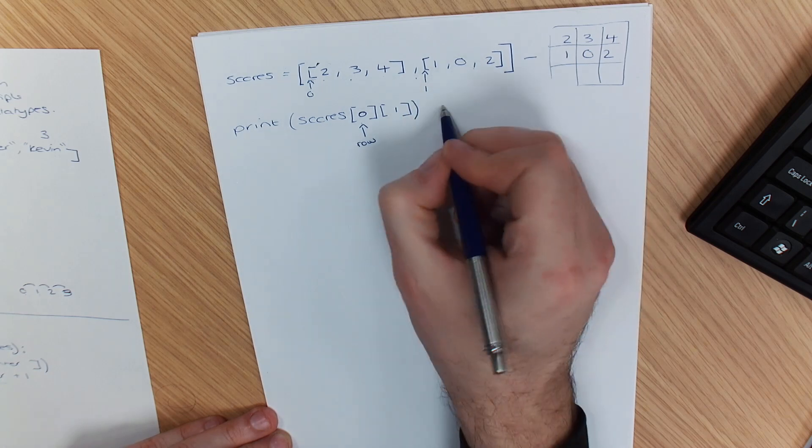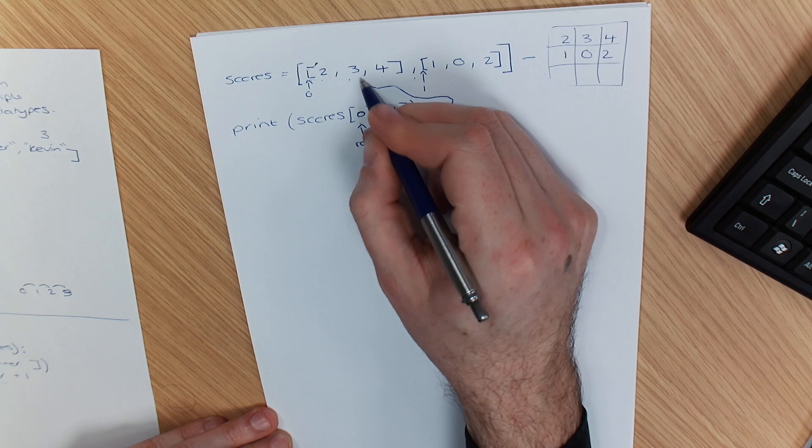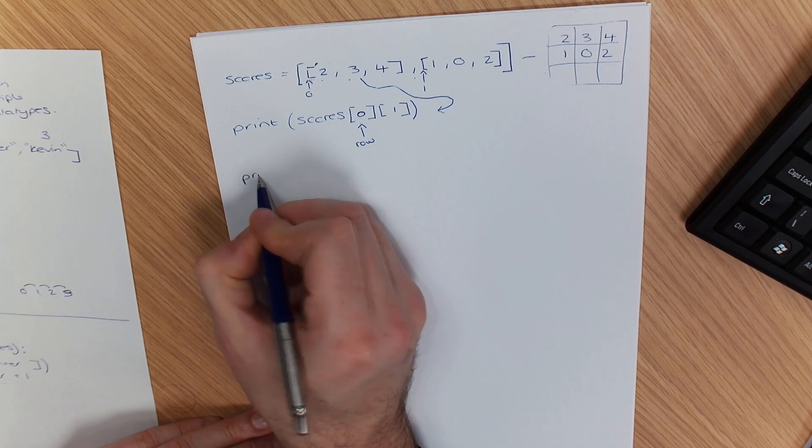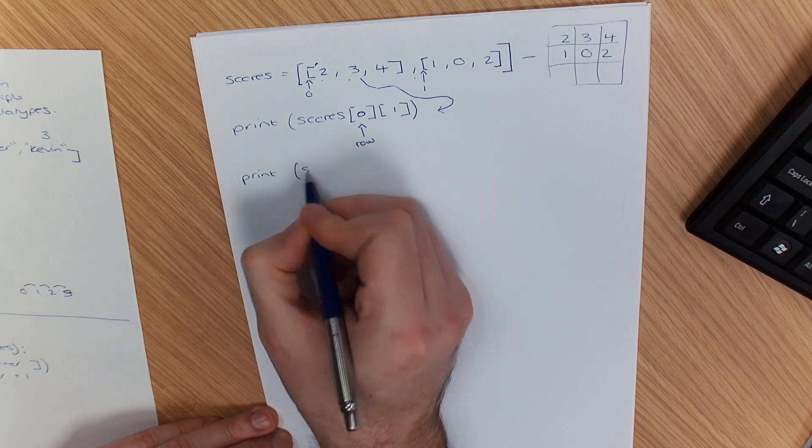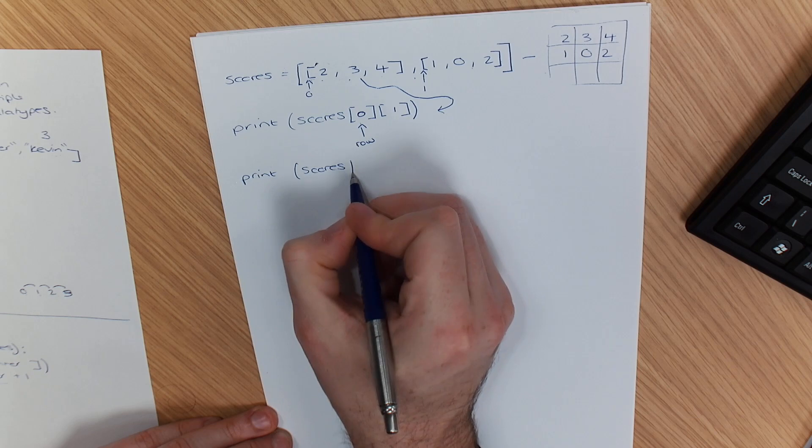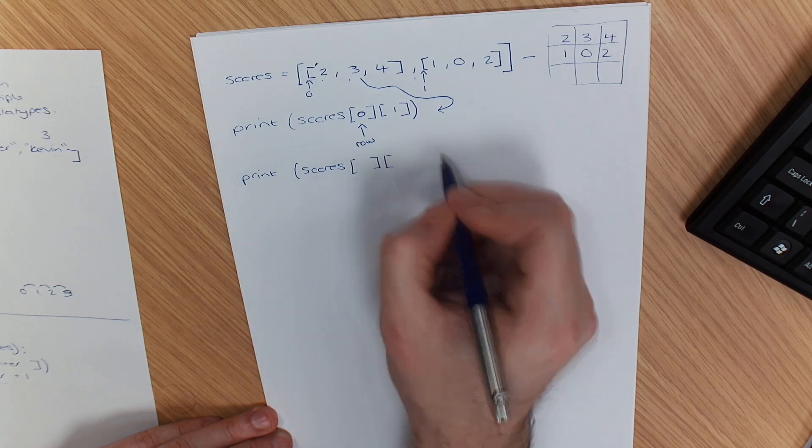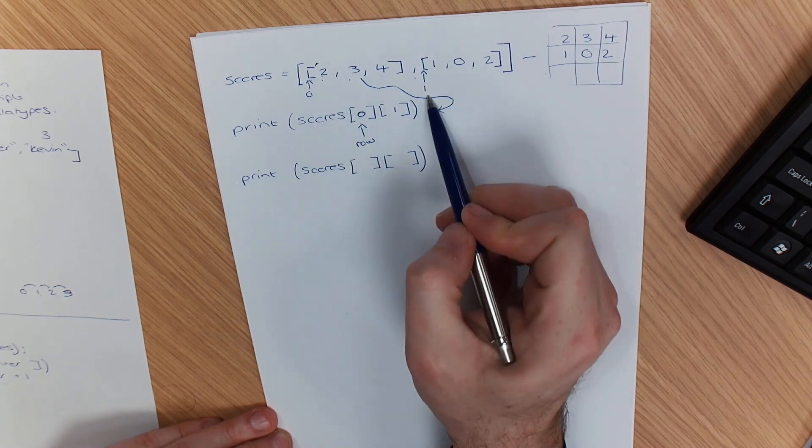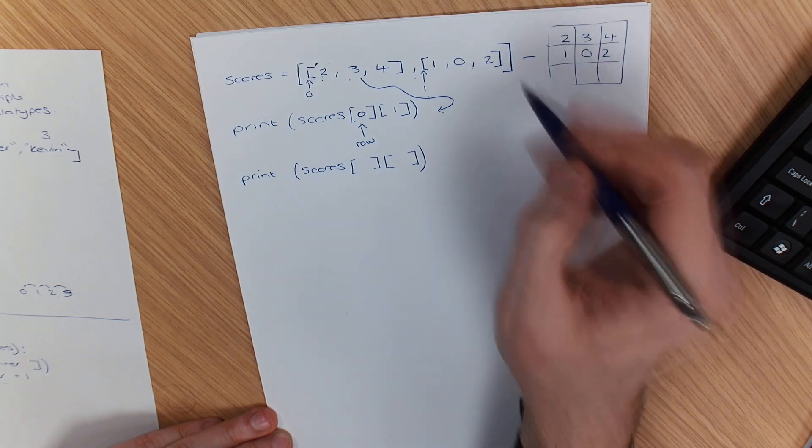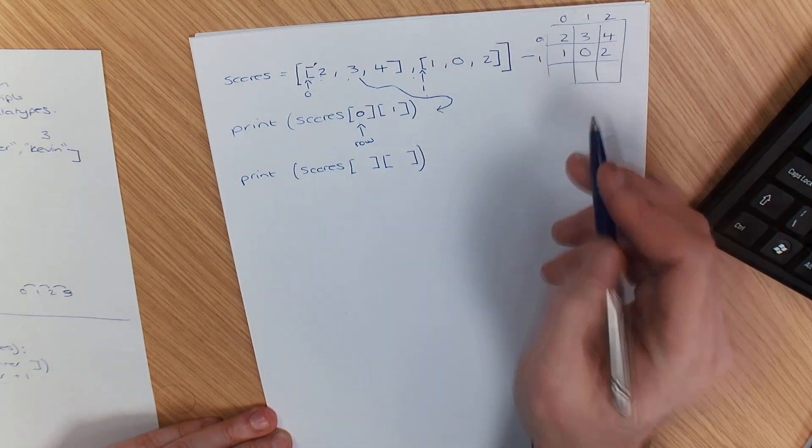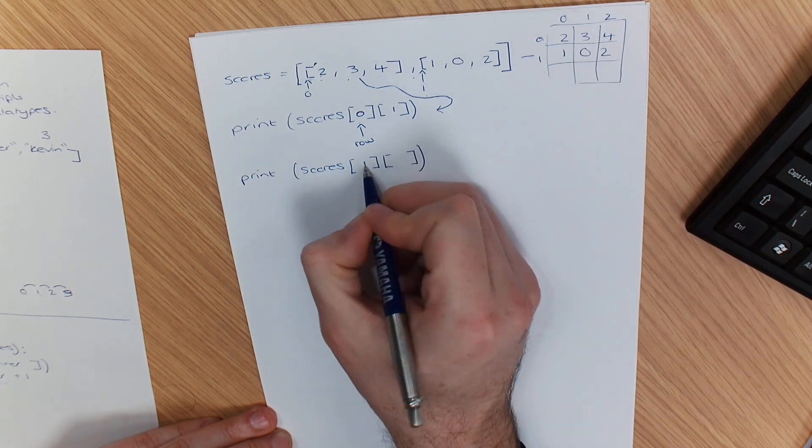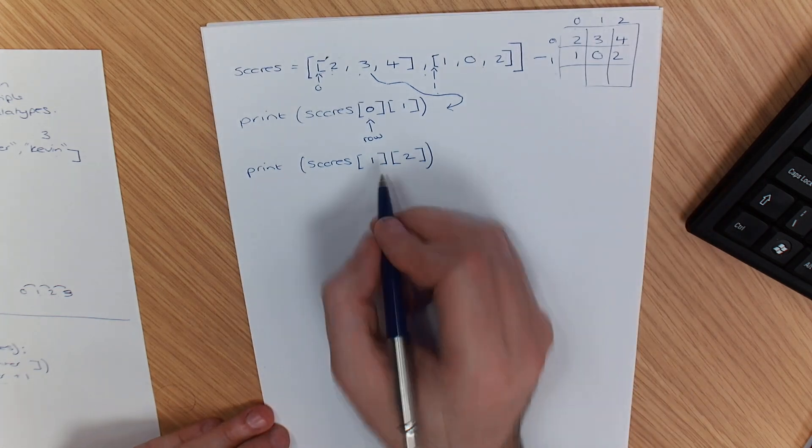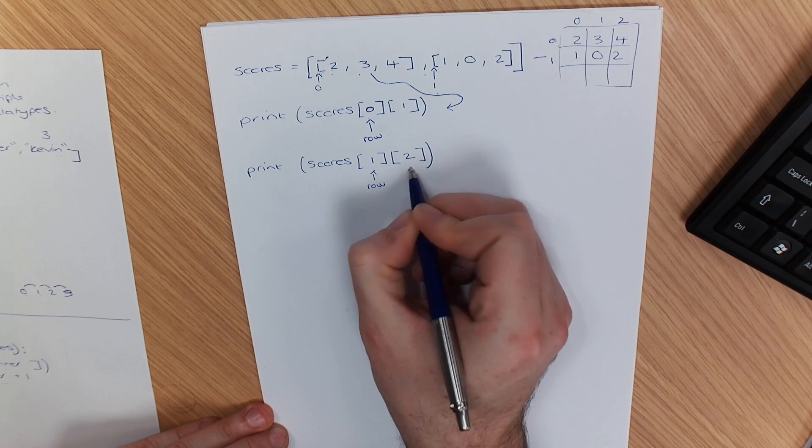You've got your row and then your column, so zero one. If I wanted the number three, if I needed to print the number two here I would do print scores. I want the number two from this row, so which row is this on? One, yep. So that's one zero one zero one two, so I need row one and column two because our index starts at zero. So again this is our row, this is our column.